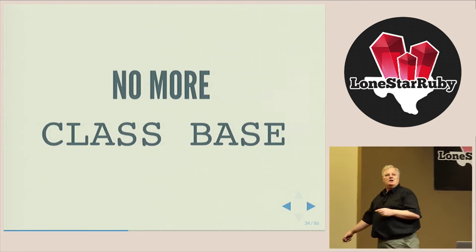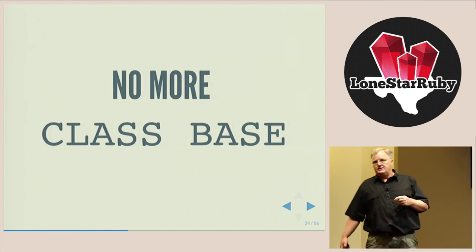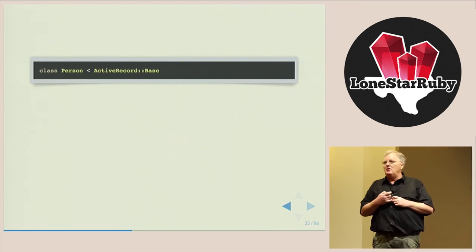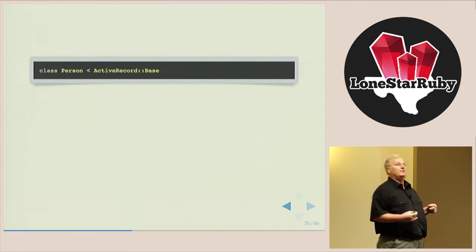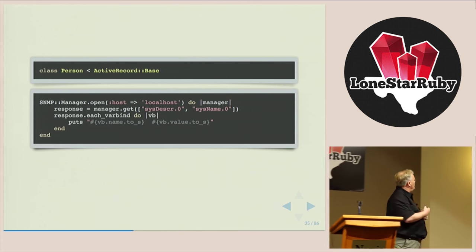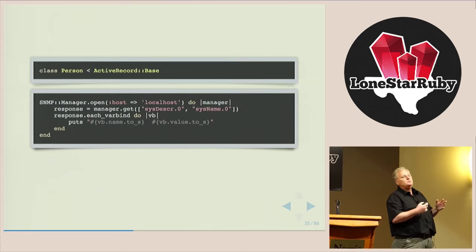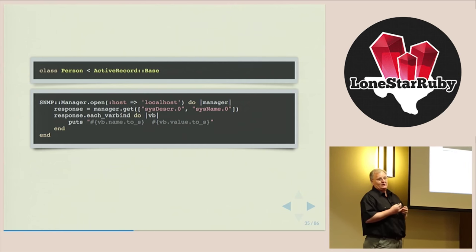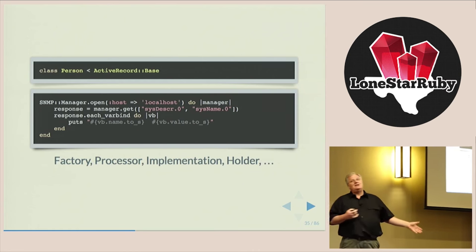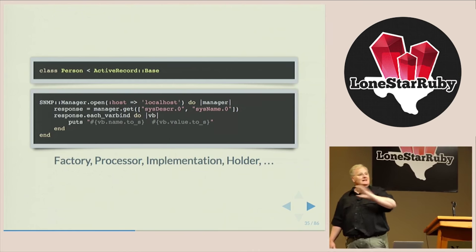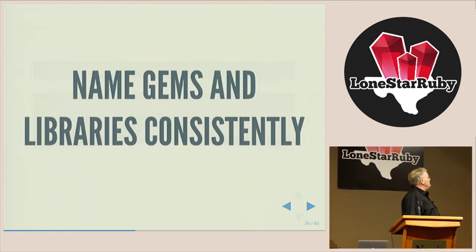And related to honoring names, rule: no more class base. class person less than active record colon colon base. That means there's a class base lying around there. Here's an example from SNMP. SNMP called manager. Why is it called manager? Because whoever wrote it thought, well, manager sounds pretty important and this is pretty important so therefore, I'll call it manager. It's nothing to do with managing. It's actually a host connection. Whenever you see class names like factory, processor, implementation, holder, in fact, any class name that's named after a pattern, delete it. No more names like that.